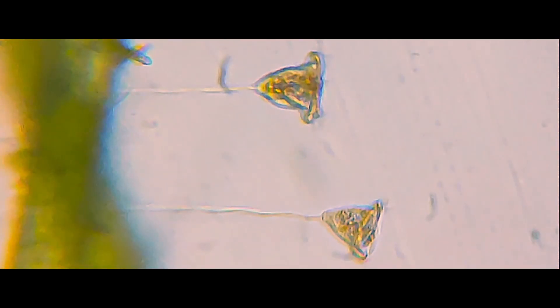Oh, the vorticella! One of the most common freshwater species that you can find on a piece of moss or algae.